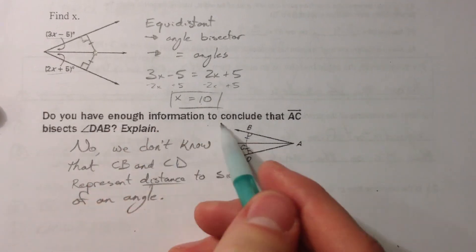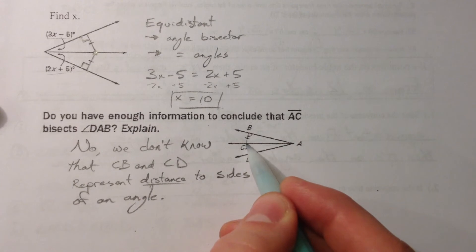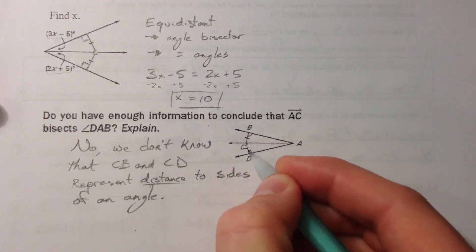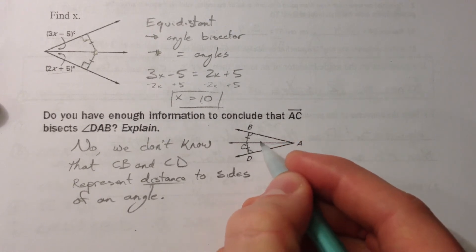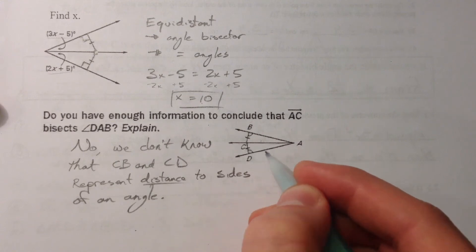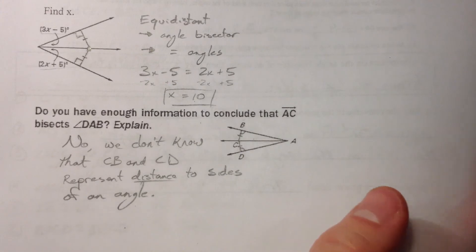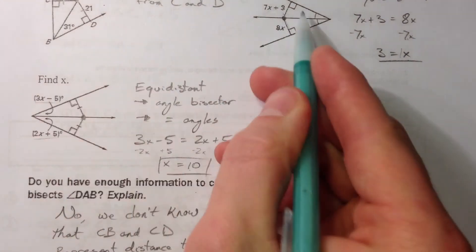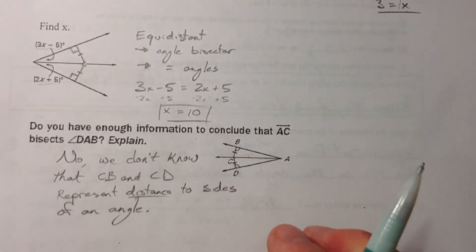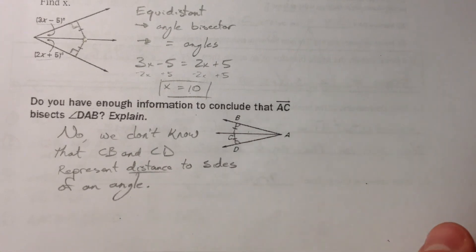Do we have enough information to conclude that AC is the angle bisector? We have congruent segments and congruent angles, but that gives us angle-side-side, which is not enough to prove the triangles congruent. The key difference from the valid cases is that we don't have right angles here, so we can't confirm these segments represent the perpendicular distance to the sides.